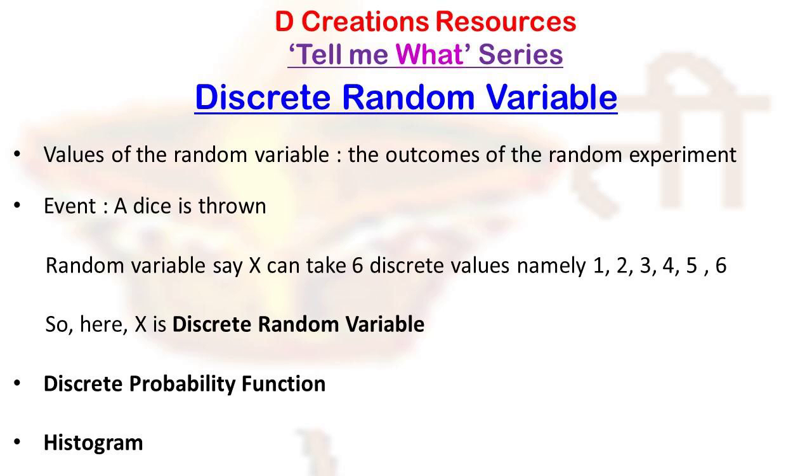So this X is called a random variable because it will vary randomly. For example, when you cast a dice, right now it is 3, some other time maybe 5, and then the third time it can come back to 3. You can't really predict it. So it is a very random process. That is why it is called a random variable.